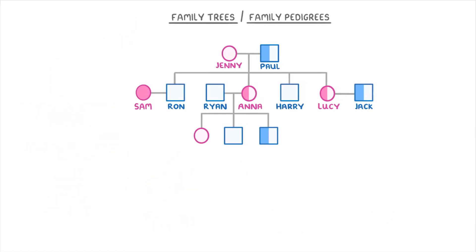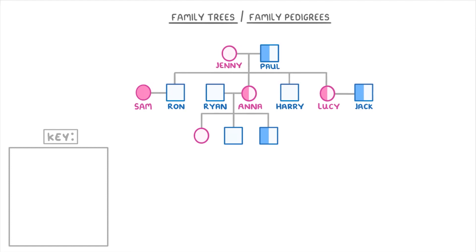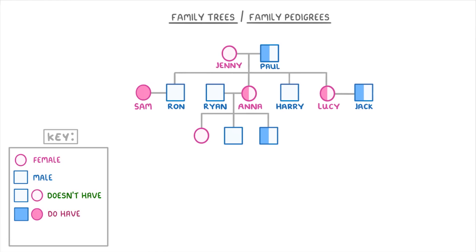Whenever you're given a family pedigree like this in an exam, you'll also be given a key which explains what all of the symbols mean. For this example, circles represent females and squares represent males. If the shape isn't shaded then it means the person doesn't have the condition, whereas if it is shaded they do have the condition. Lastly, these half-shaded shapes indicate somebody who's a carrier. Remember that you'll always be given a key, so you don't have to memorize any of this — you just need to understand how the key works.